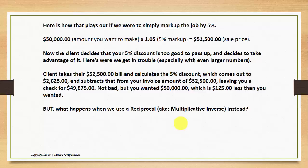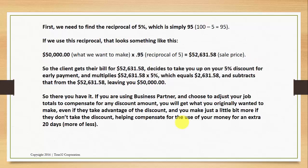But what happens when we use a reciprocal — also known as a multiplicative inverse — instead? First, we need to find the reciprocal of 5%, which is simply 95%: 100 minus 5 equals 95. If we use this reciprocal, that looks something like this: $50,000, which is what we want to make, divided by 0.95 — the reciprocal of 5% — equals $52,631.58, our new increased sale price to accommodate for the discount.